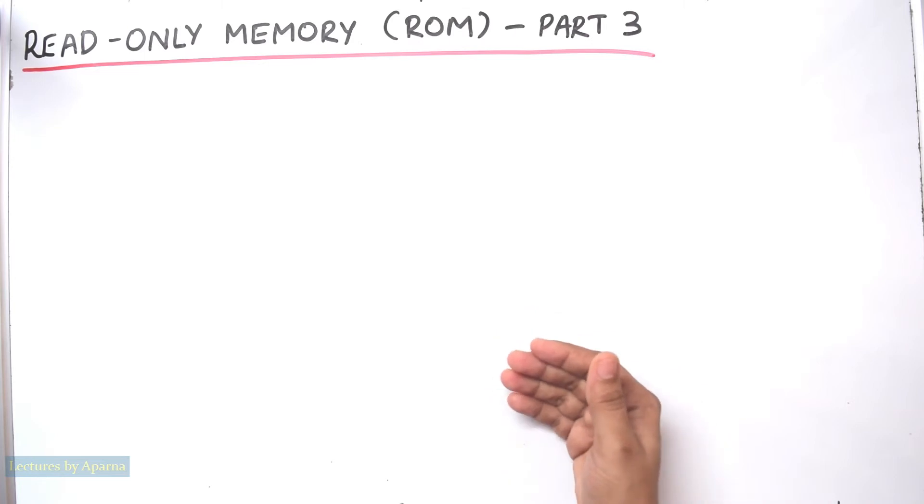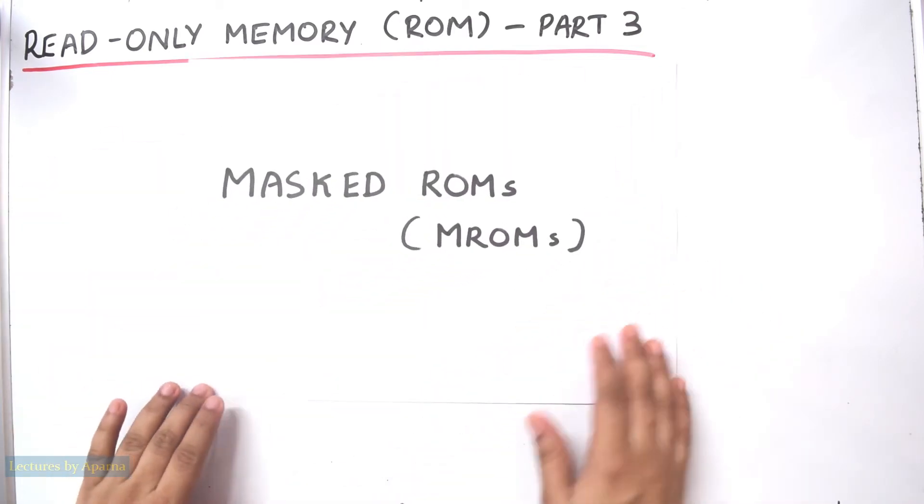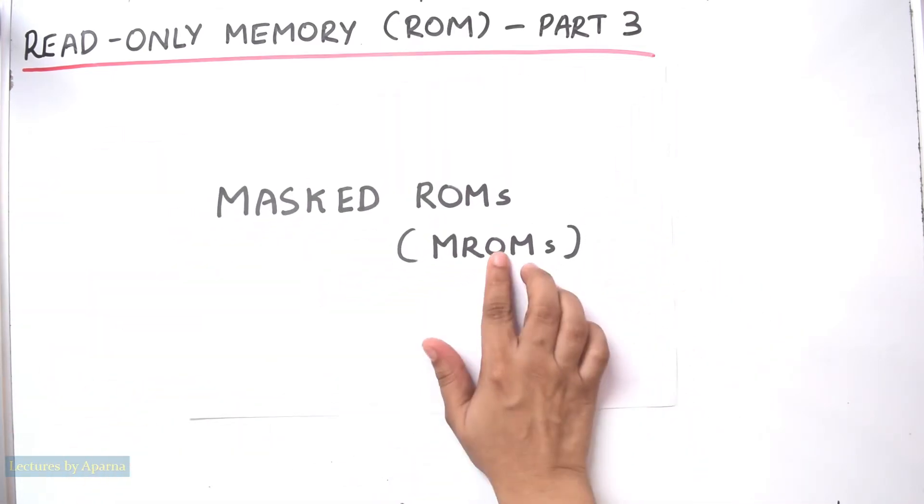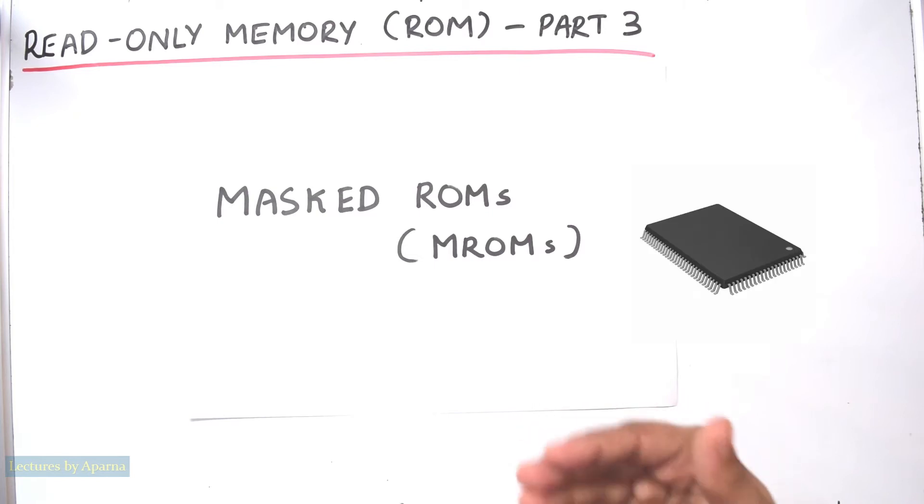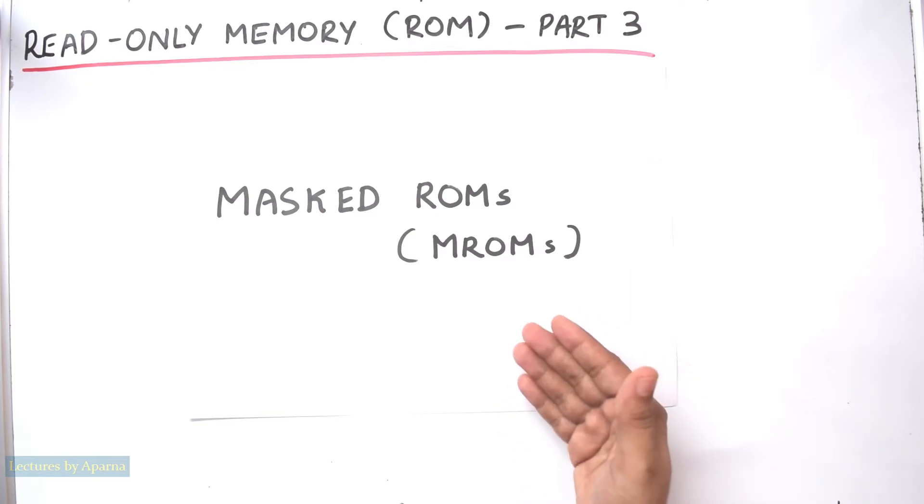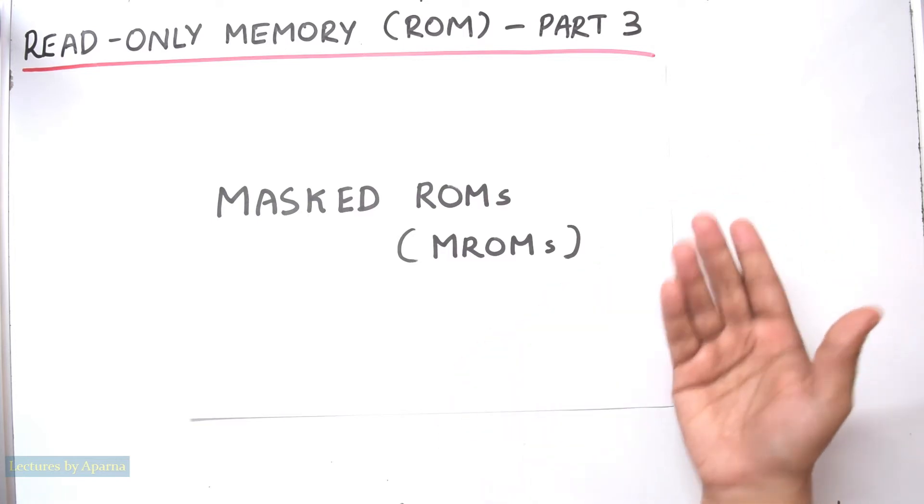In today's session, we will discuss various types of ROMs. The first type of ROM is Masked ROM or MROM. These are the very basic type of ROMs available as memory chips or memory ICs or memory integrated circuits. If you want these memory chips for a particular purpose of yours, you send a list of data to be stored in the ROM IC to an IC manufacturer.